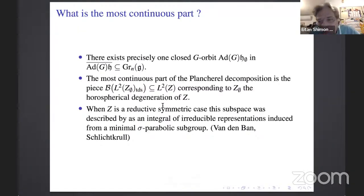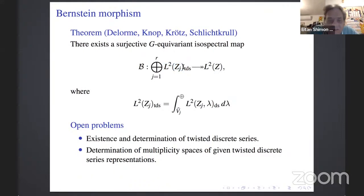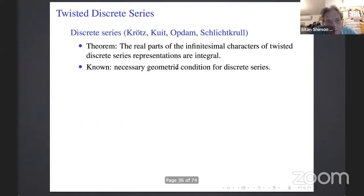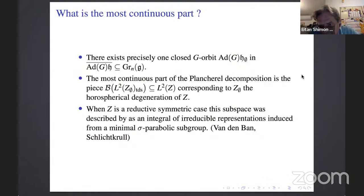To summarize the relation: L²(Z) relates to twisted discrete series on Z itself (somewhat mysterious) and on Z_∅ (what we want to study). I will now say more about Z_∅ and especially about the subgroup H_∅.